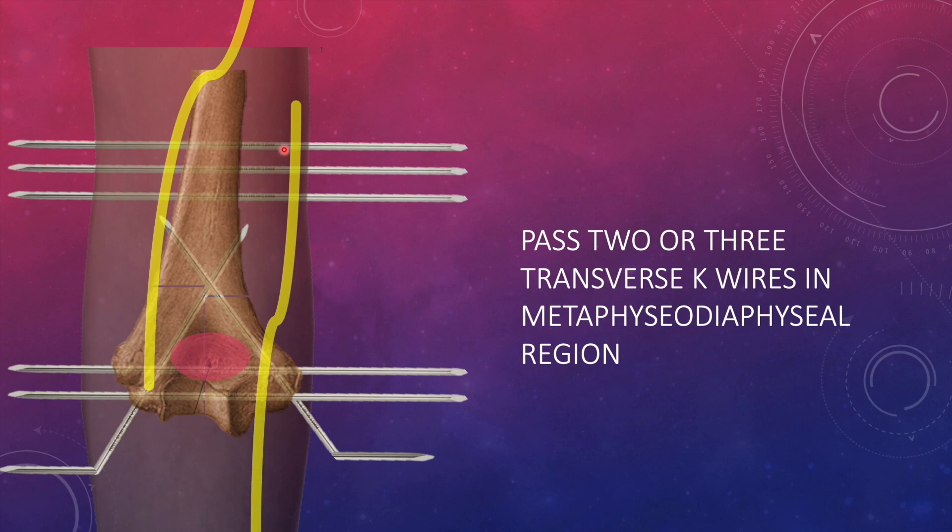You have to lift the skin cover then pass the wire directly under direct vision then enter the diaphysis. On the ulnar side or medial side also, you have to be careful to retract the ulnar nerve anteriorly while passing the wire then make them exit through the skin cover. Once that is done, you are ready with your diaphyseal and metaphyseal assembly.